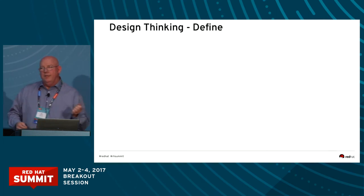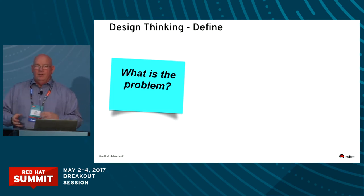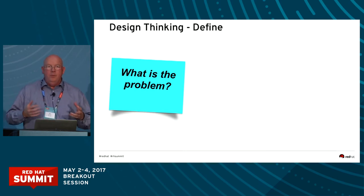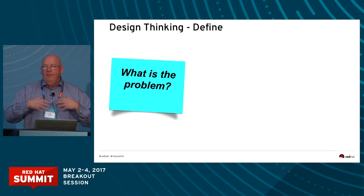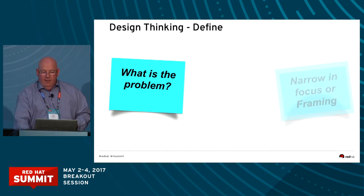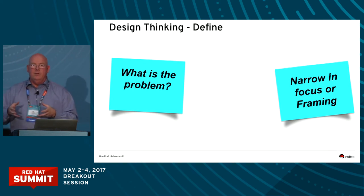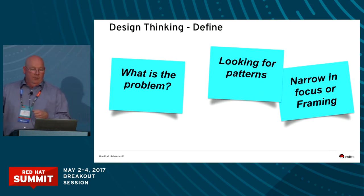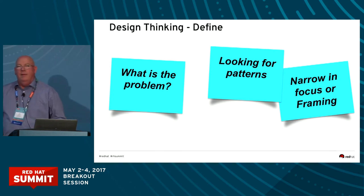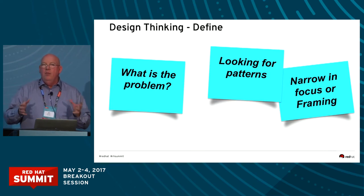The next step is defining what the problem is. It's really easy to say the problem is this button is in the wrong place, but what you're really trying to do is come up with an abstract idea of what the problem is in general for these users — not so much the problem with the app, but what are the problems of the users when they use the app. You want to narrow your focus — we're not going to boil the ocean or rewrite the entire system. Find something meaningful that would have impact on users and start defining that as a problem.